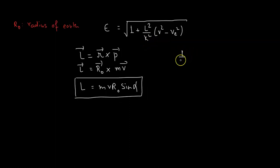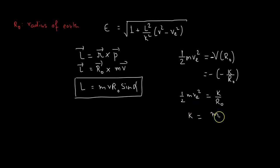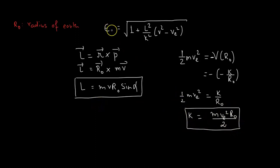Now we find K. The kinetic energy ½mV_e² equals the magnitude of the potential at the Earth's surface, which is K/R₀. Therefore K = mV_e²R₀/2.